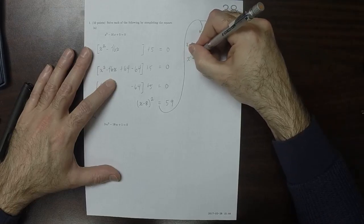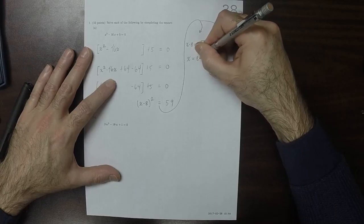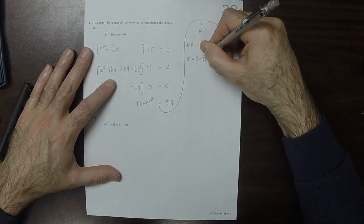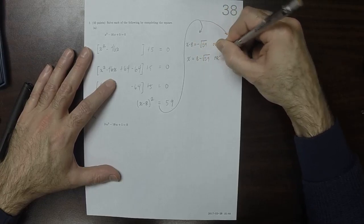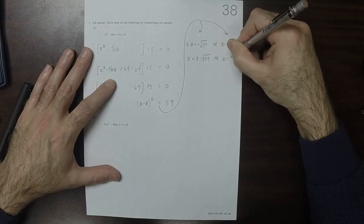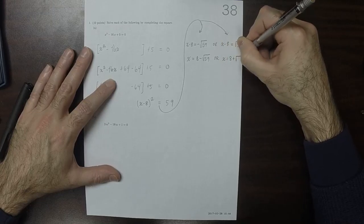So x is 8 minus the square root of 59, or x is 8 plus the square root of 59.